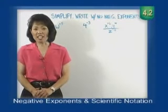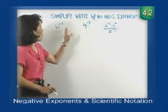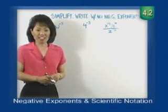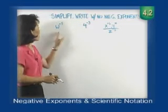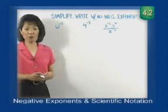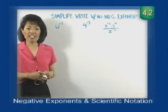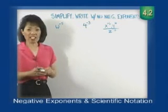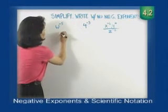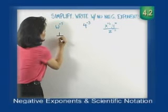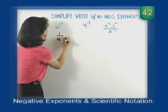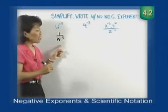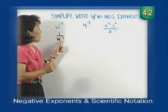Let's take a look at some negative exponents. We're going to simplify these expressions by writing them with no negative exponents. Here we have w to the negative fifth. By definition, if we want to eliminate our negative exponent, all we have to do is take it and rewrite it in the denominator. By moving it from the numerator to the denominator, it changes the sign of the exponent.